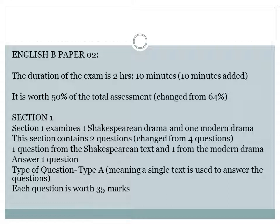Section 1 in particular is different. It examines one Shakespearean drama and one modern drama, as before, but there are now only two questions in this section, changed from four questions. One question comes from the Shakespearean text and one from the modern drama. You will only be expected to answer one of these two questions, and this question is worth 35 marks.